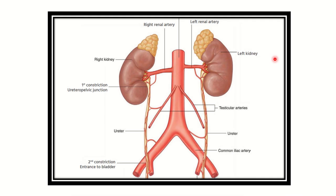Here we can see the right adrenal gland and the left adrenal gland, with the right kidney and left kidney below them. The adrenal glands lie superiorly and slightly medially to the kidneys.